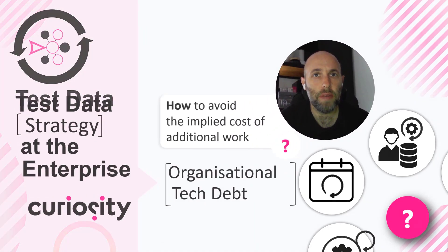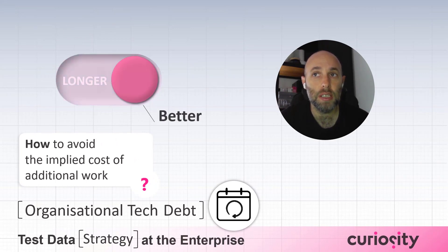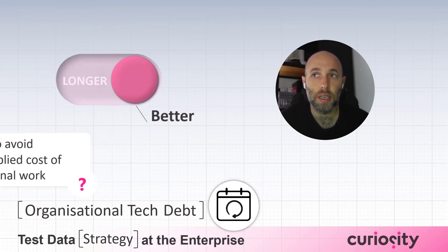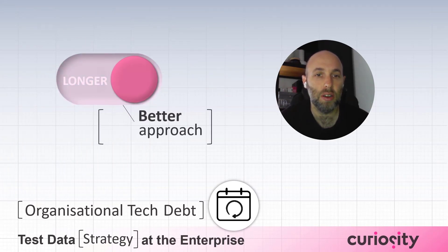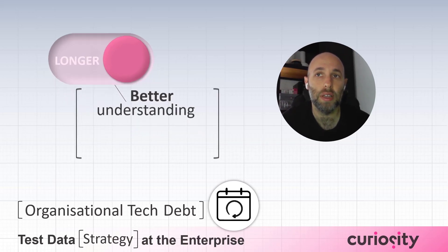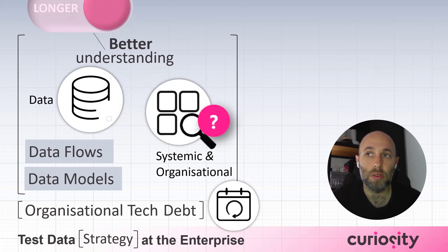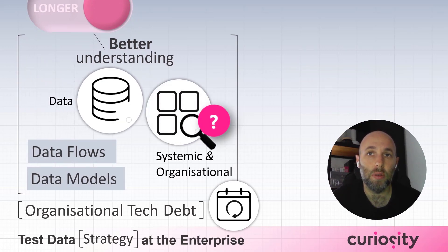In software development, technical debt is the implied cost of additional work caused by choosing an easy solution now instead of using a better approach that would take longer. Often we speak to organisations that don't understand the data they hold in their systems, don't have models or data models that have become out of date, or don't understand the data flows within their organisation.